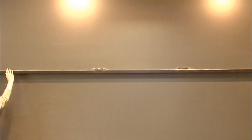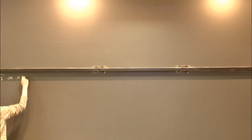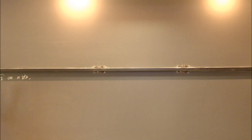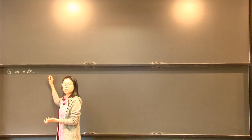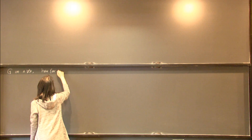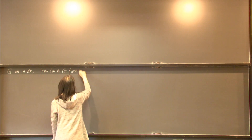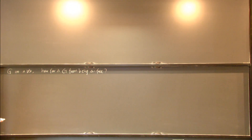I study extremal combinatorics and in particular graph theory. Let me start with a concrete problem. Say I have a graph G on n vertices — throughout this talk G denotes a graph and n is always the number of vertices — and I care about how far away the graph is from satisfying the property of being triangle-free.